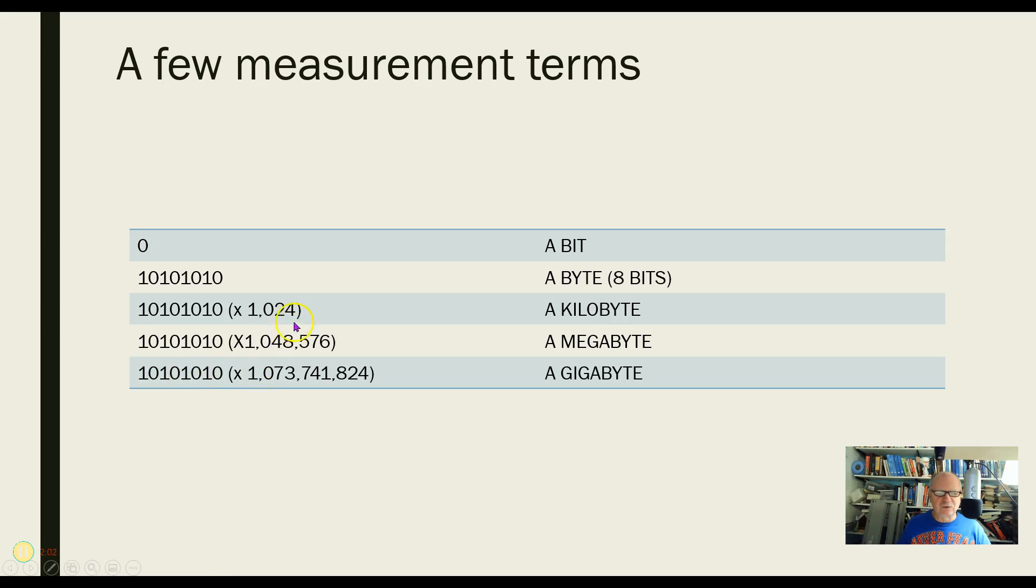Now, we do use 1024, and that's because with ones and zeros, we can represent powers of two, and 1024 happens to be a power of two. So that's why we do that.